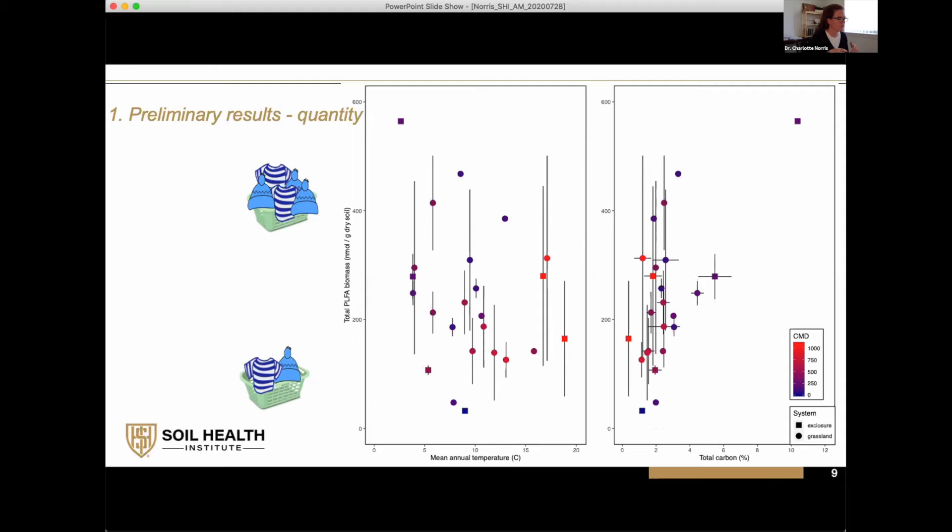Within the site, there is a fair amount of variation as well. Then looking at it in terms of total carbon, increasing total carbon means increasing biomass. That's a general trend we would expect—increasing energy source for the microbial community leads to increasing biomass.